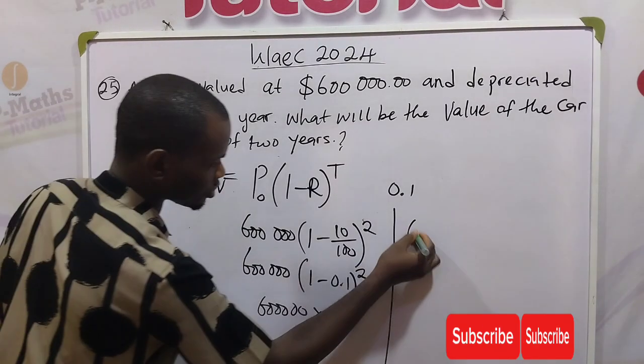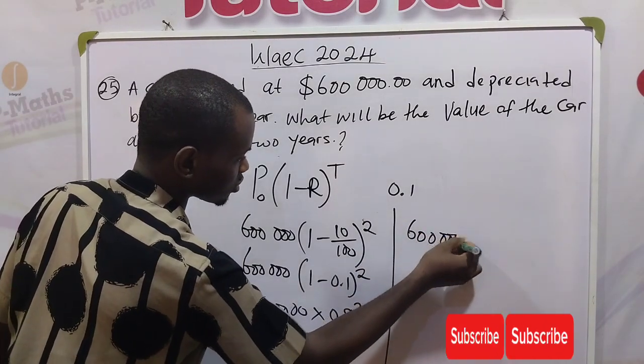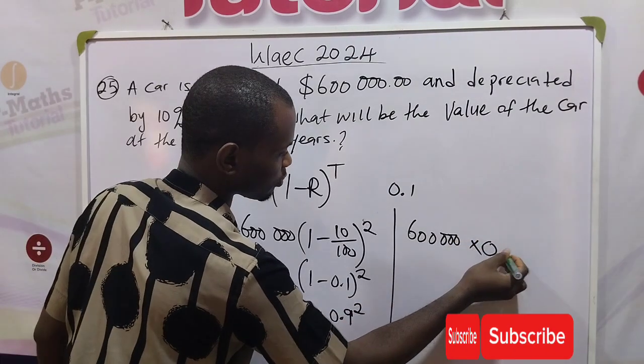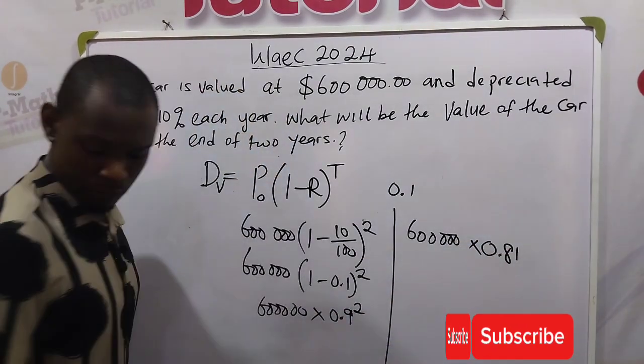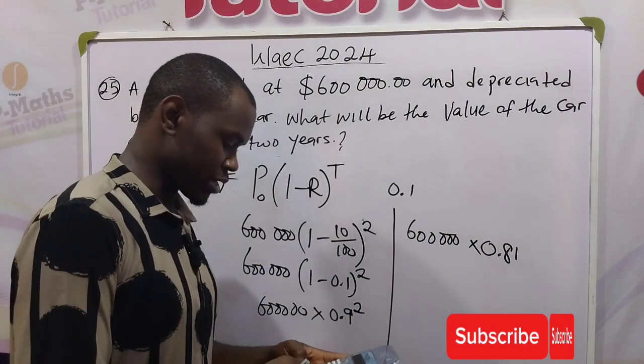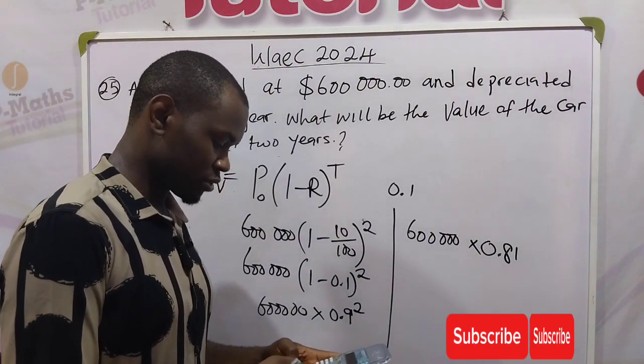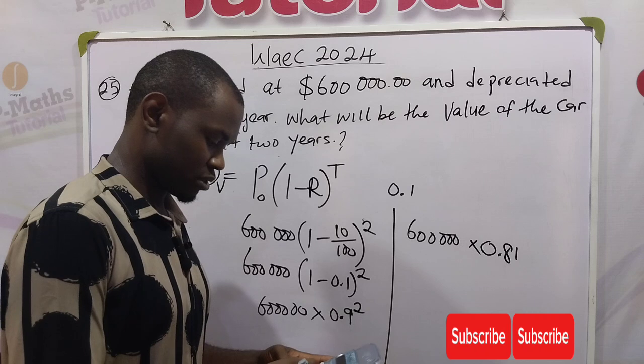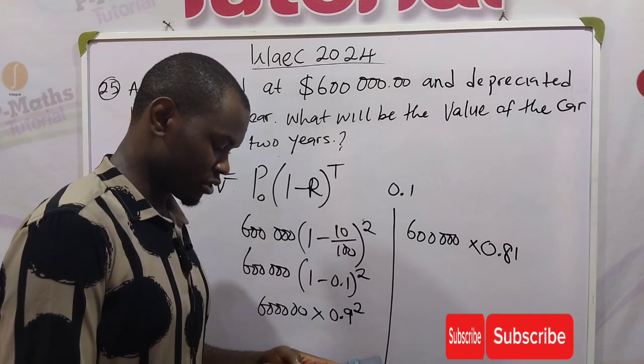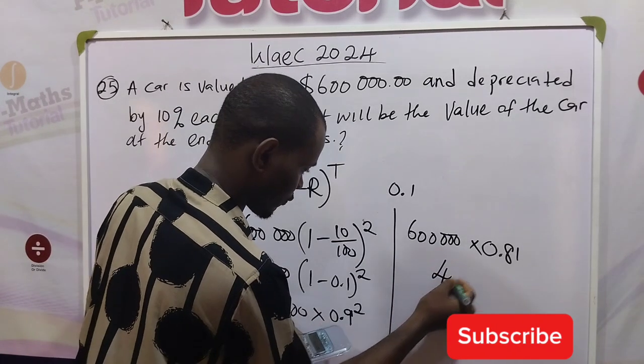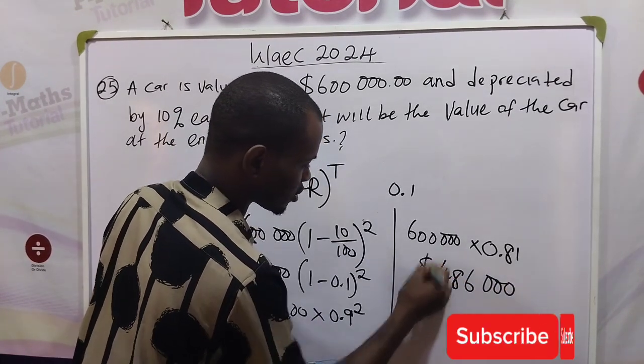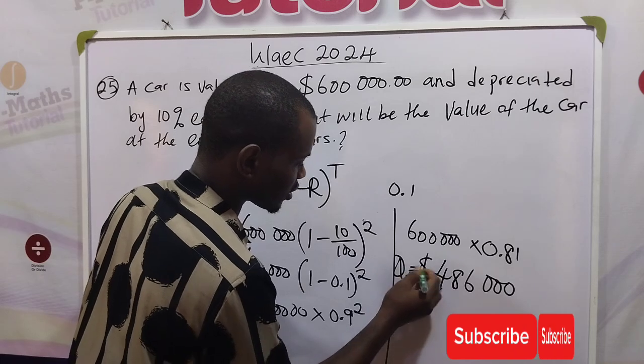Then we multiply. This will be 600,000 times 0.9 raised to the power 2 will give us 0.81. Using the calculator, we multiply 600,000 times 0.81 and that is giving me 486,000 in dollars. So this will be the depreciated value of the car after two years.